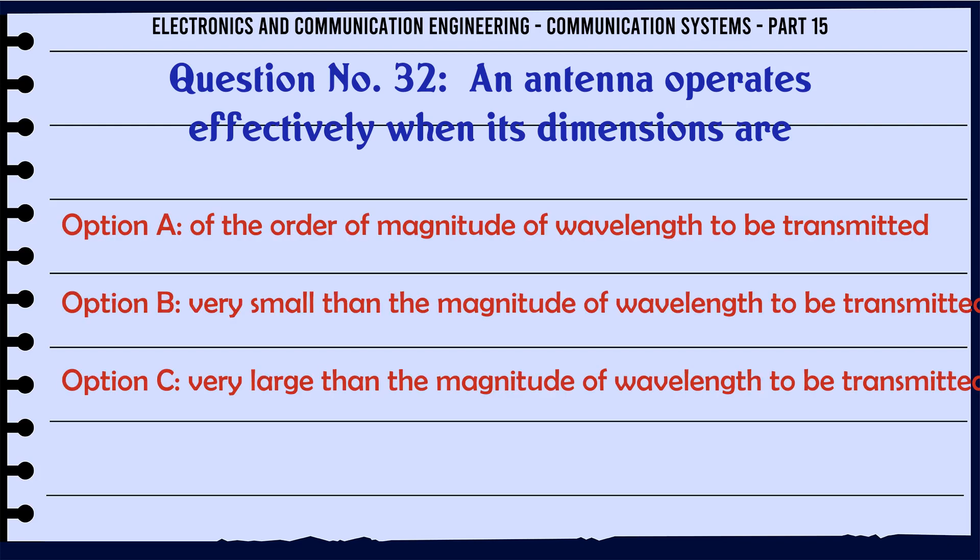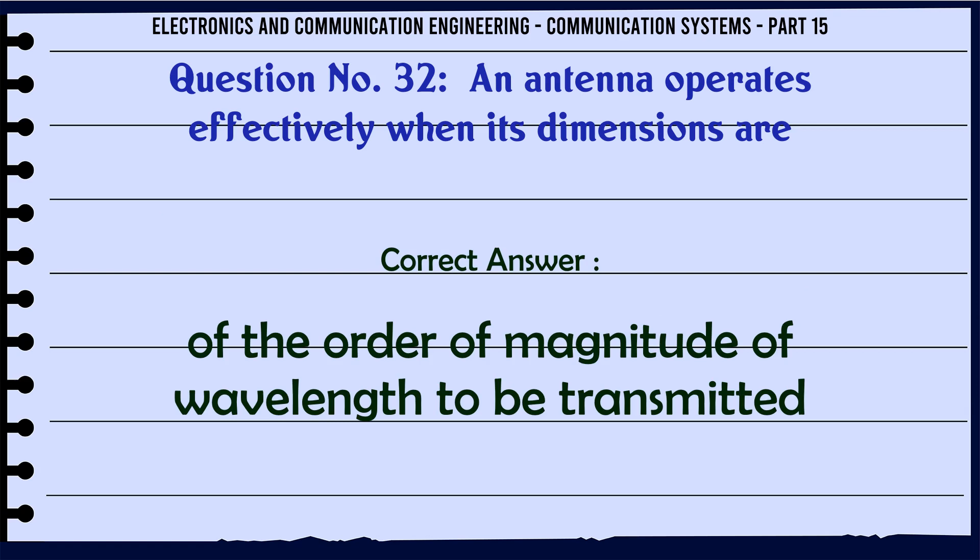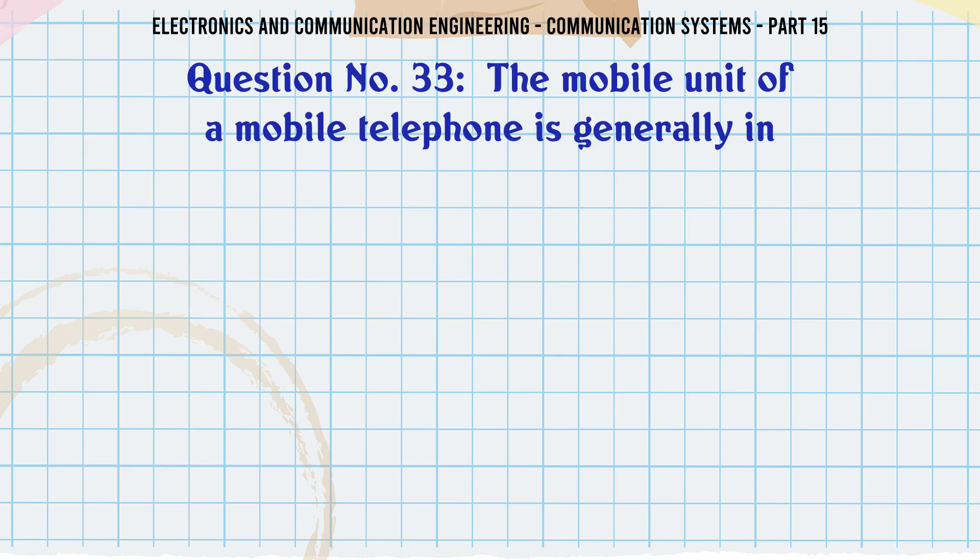An antenna operates effectively when its dimensions are: A of the order of magnitude of wavelength to be transmitted, B very small than the magnitude of wavelength to be transmitted, C very large than the magnitude of wavelength to be transmitted, D either A or B. The correct answer is of the order of magnitude of wavelength to be transmitted.